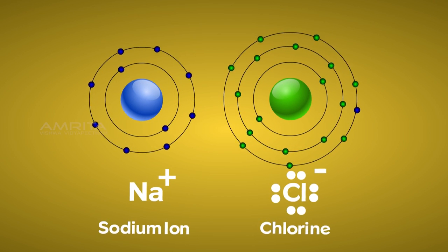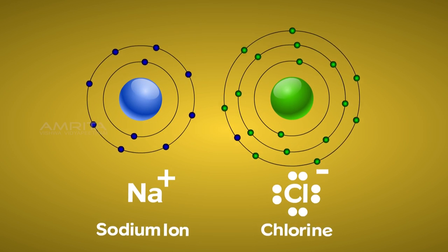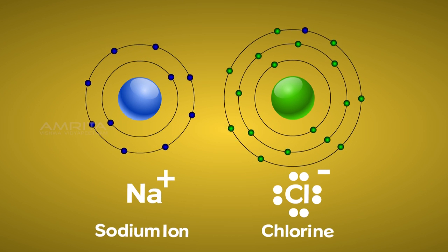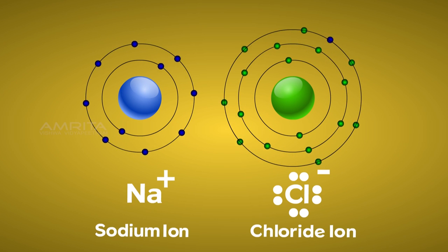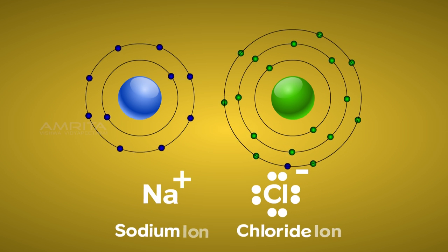The electron released from the sodium atom is gained by the chlorine atom and completes its octet. Now chlorine becomes a negatively charged chloride ion. The electrostatic force of attraction between these oppositely charged ions results in the formation of sodium chloride molecule.